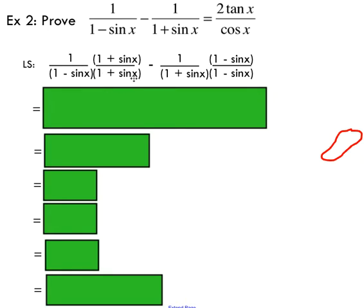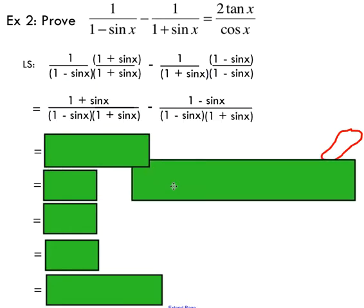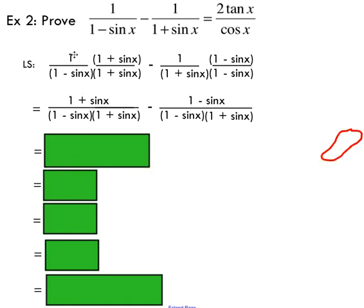Doing that will allow me to have a common denominator between these two terms. Now I can start adding these together. I've multiplied one times one plus sine x just to get one plus sine x on top. Same thing over here. I've got one minus sine x on top. Now I've got common denominators, so I might as well combine these.